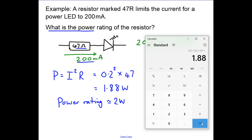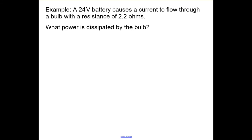A 24-volt battery causes current to flow through a bulb with a resistance of 2.2 ohms. The question is: what power is dissipated by the bulb?